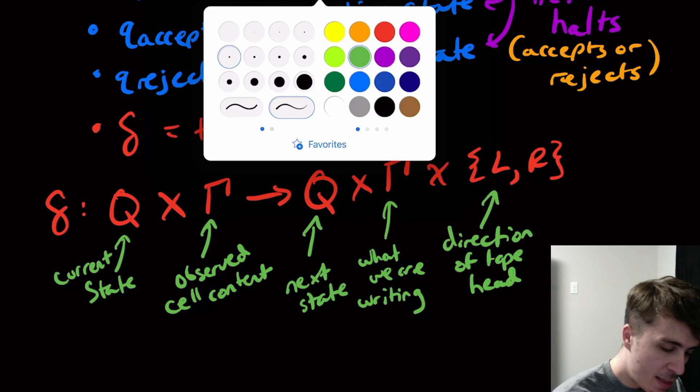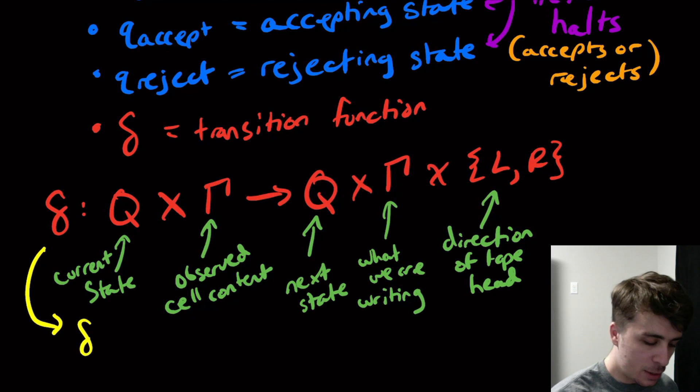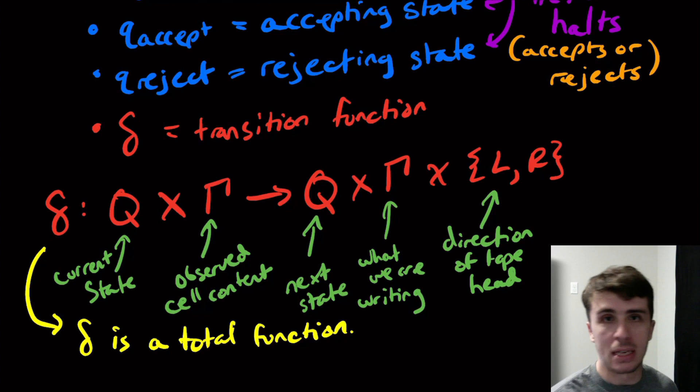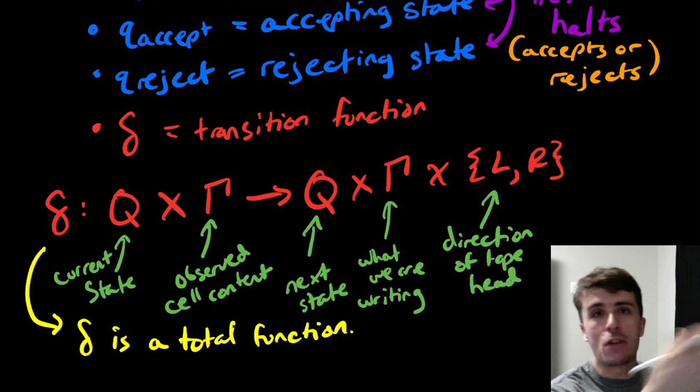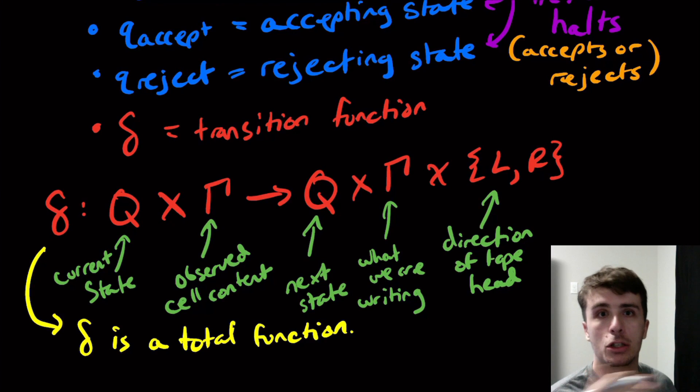One thing we will also note is that delta is a total function. This just means that no matter what state you have and whatever cell content you have, you will always have exactly one transition to do. That is exactly the same idea as a DFA, except we have two things to worry about instead of one. Every state has every possible input character in a transition going out. Same thing here, but it's cell content instead of input content.